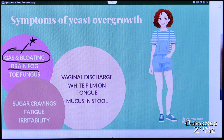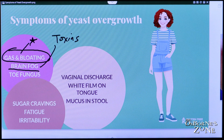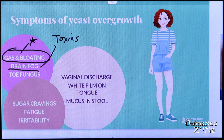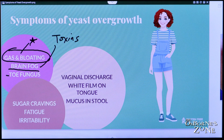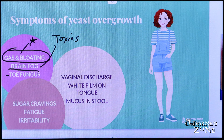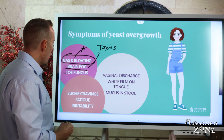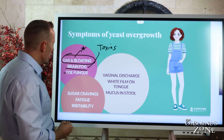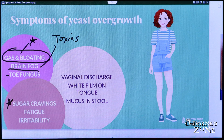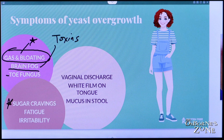Brain fog is another one. A lot of people don't realize that yeast can produce different types of toxins, and some of these toxins can slow down our thinking and our ability to process. Another big one is toenail fungus — a very common sign that a lot of people just ignore. But if you're developing fungus in the nail beds, you want to take action immediately. Sugar cravings are also very common. Yeast like sugar, and they will actually hijack your nervous system in your GI tract and message your brain to eat sugar because they want food.